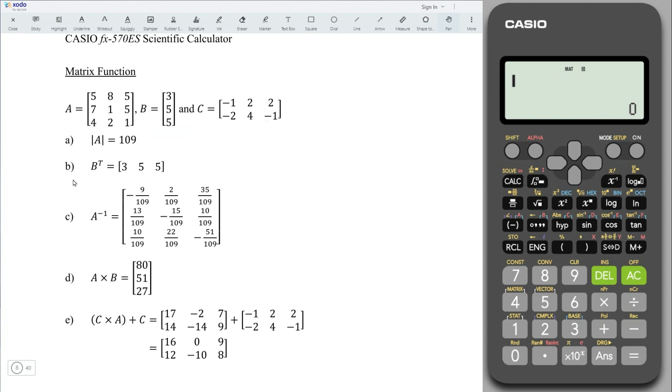Let's continue for the calculation. For part B, determine the transpose of matrix B. Press on shift 4. And look for 8 for transpose. Shift 4 again. And we need matrix B, which is 4. Press on equal. And we should obtain the correct value.